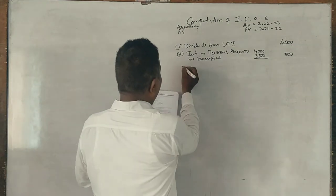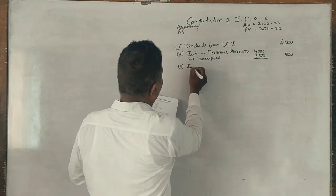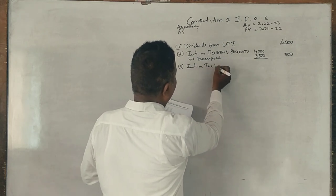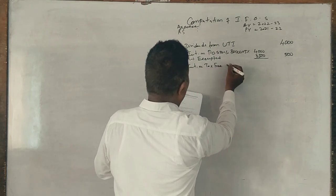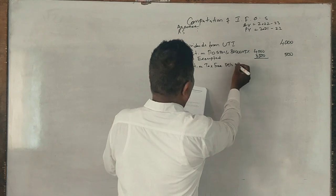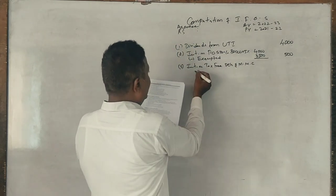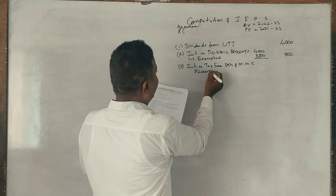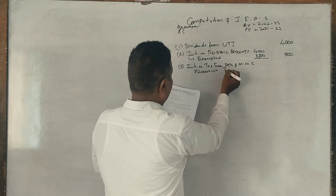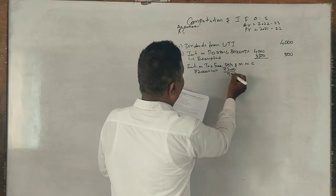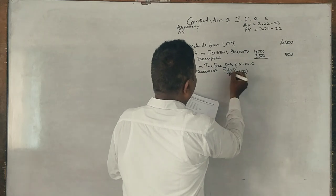Interest on tax-free debentures of Mysore Municipal Corporation: 72,000 into 10 percent equals 7,200, divided by 0.9 gives 8,000. Fully taxable, 8,000.